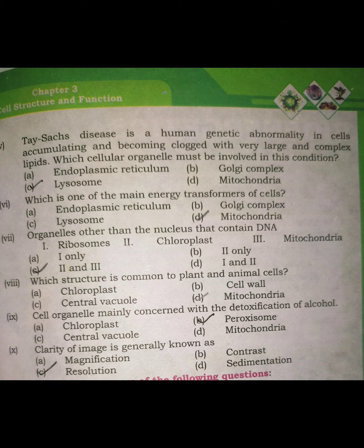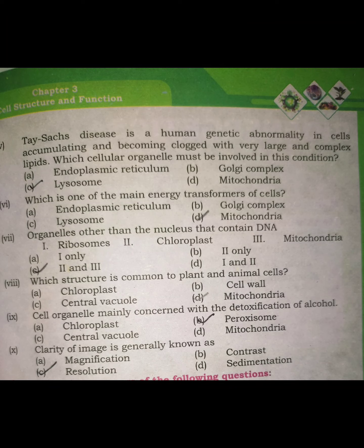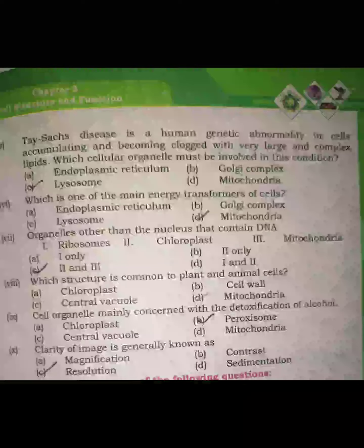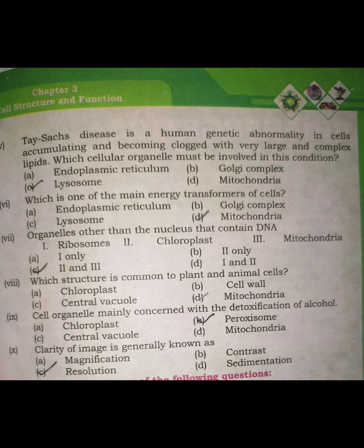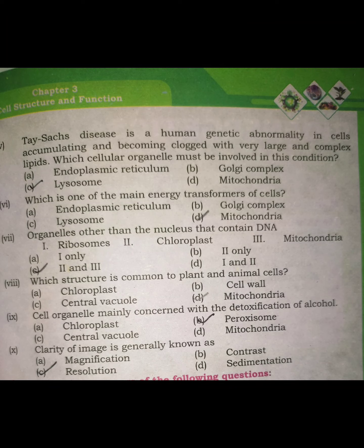The next MCQ: which organelle is mainly concerned with the detoxification of alcohol? Chloroplast is only for colour pigment, vacuole is for storage, and mitochondria are energy sources. The peroxisome is the organelle responsible for detoxification of alcohol — it converts it into hydrogen peroxide and then into water. Option B is correct.